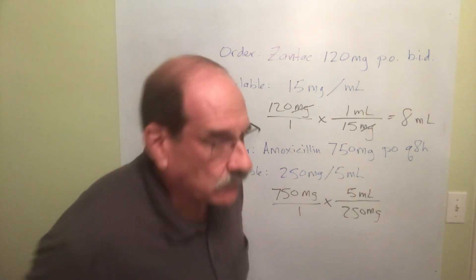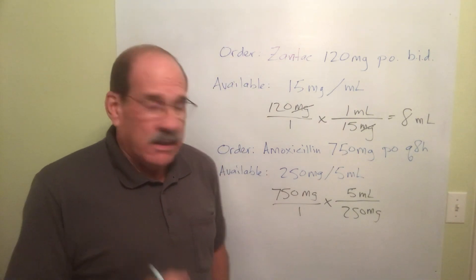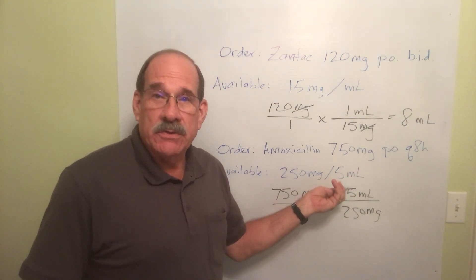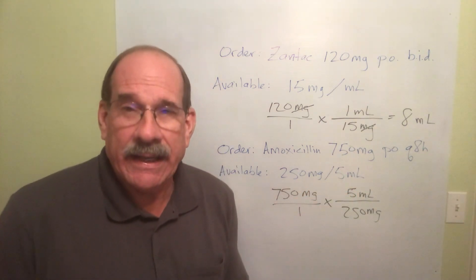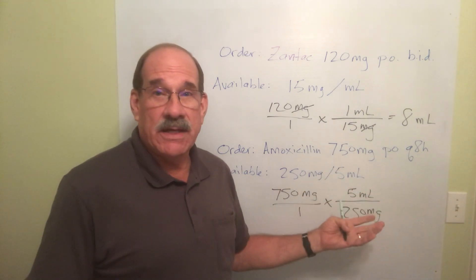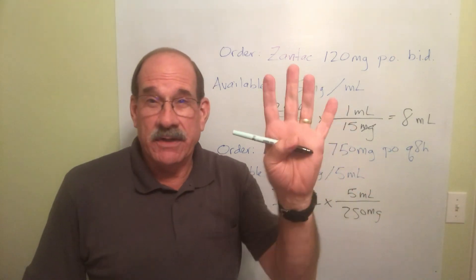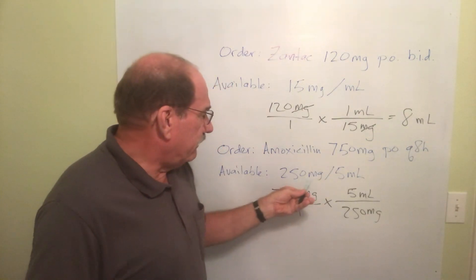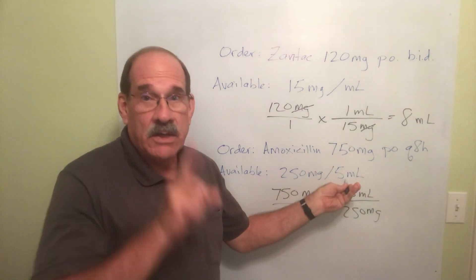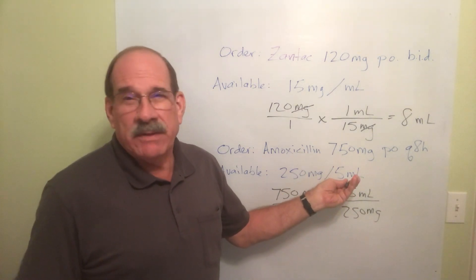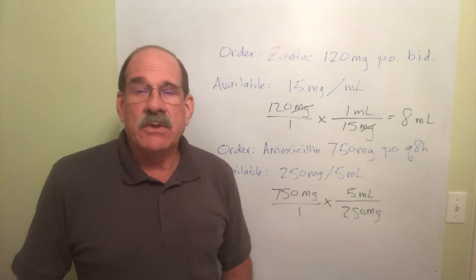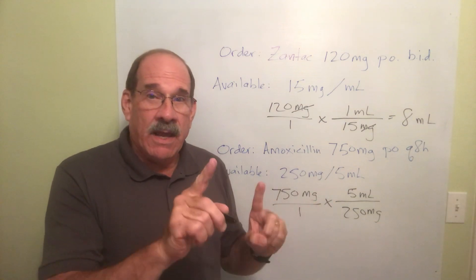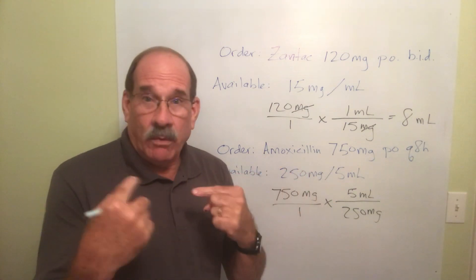A lot of oral liquids tell you how much medicine there is per five milliliters. Why? Because five milliliters is the same as a teaspoon. So it's like saying 250 milligrams per one teaspoon — a lot of people think better in teaspoons. Still, put it down as it is: 250 milligrams over five milliliters.